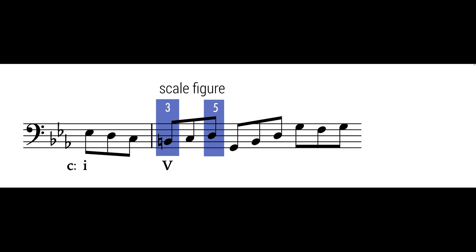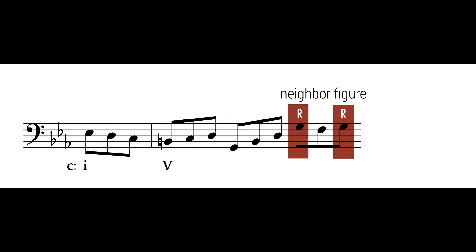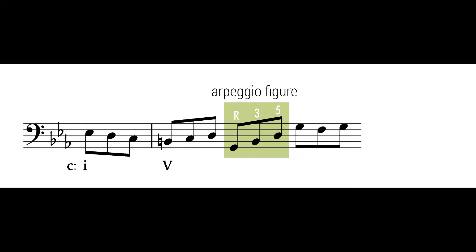Scale figures connect two or more chord tones using passing notes. Neighbor figures ornament a single chord tone with a non-chord tone — by the way, the R stands for the root of the chord. Arpeggio figures are made entirely of chord tones.